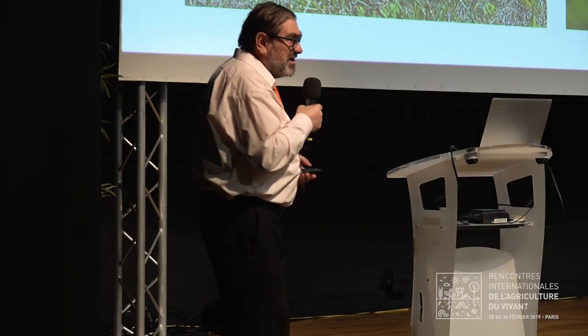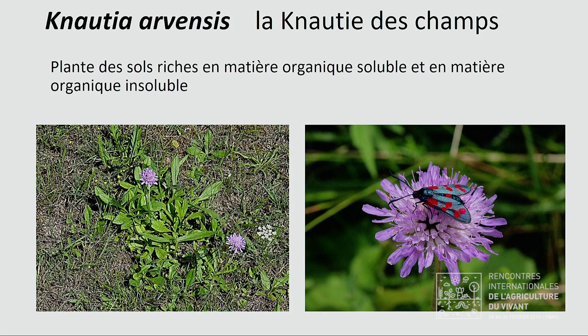En prairie permanente, on a un très bon indicateur : la scabieuse (knautie), de la famille des caprifoliacées, anciennement dipsacacées. C'est un indicateur de l'équilibre de la prairie, et aussi un indicateur que le fourrage produit sur cette prairie permettra de garder les animaux en bonne santé. Sur les plantes prairiales, environ une sur trois est une bonne médicinale pour la vache qui mange l'herbe — à condition d'avoir de la biodiversité. Si on n'a que neuf plantes comme dans certaines prairies, il n'y a pas de plantes médicinales pour les vaches.